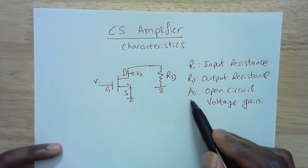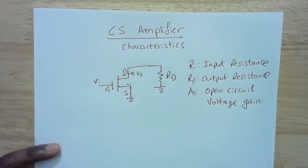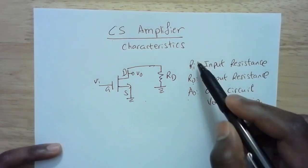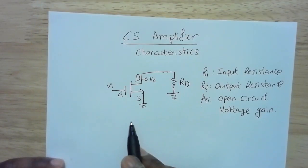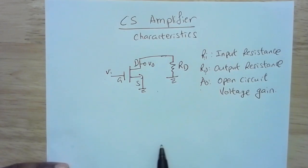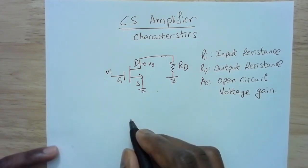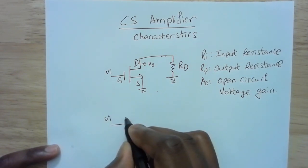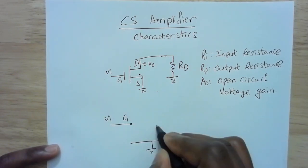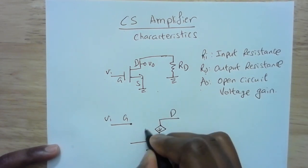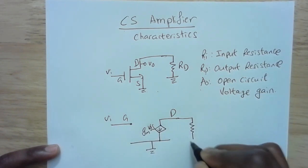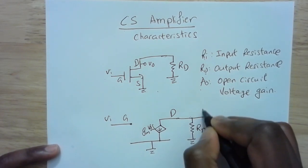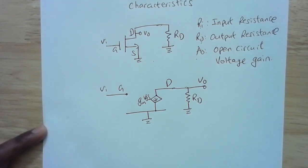Now we'll calculate all three of these for the common source amplifier. The first thing is to replace the MOSFET with a small signal model. Since the source is grounded, it's usually easier to use the pi model. In the pi model, the input goes to the gate which is grounded, and between the drain and the source there is a current source GM·VGS. Between the drain and ground we have Rd, and we measure the output there.